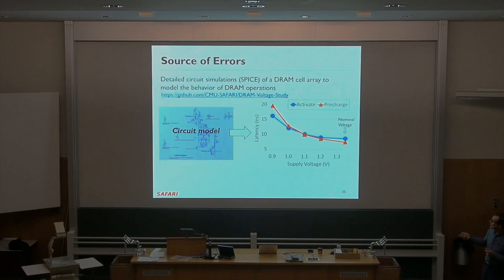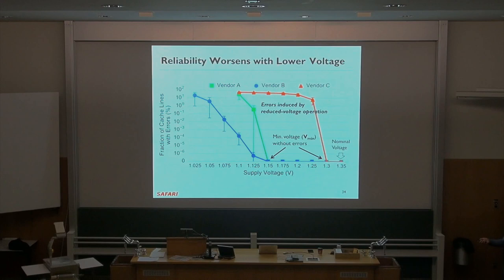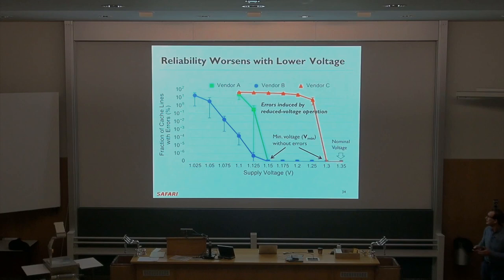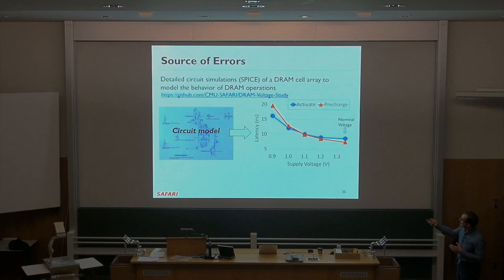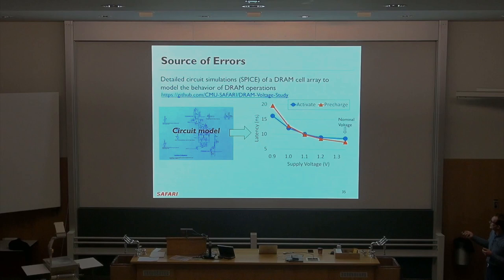The key question is: what is the relationship between supply voltage and latency? If you reduce supply voltage, things operate more slowly. You could increase latencies to see if you're still getting errors — reduce the supply voltage, increase latencies, see if you can tolerate those errors. Based on a circuit model, as you reduce the voltage level, you increase the latency to operate reliably. This was validated on a real system: we reduced voltage and looked at the reliable operation latency — the minimum latency that does not cause errors in DRAM modules.